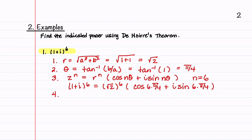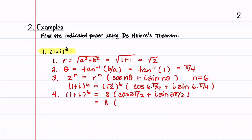Our last step is to simplify. The square root of 2 raised to the 6th is 8. We have cosine of 3 pi over 2 plus i sine of 3 pi over 2. Cosine of 3 pi over 2 is 0, and sine of 3 pi over 2 is negative 1. This gives us a final answer of negative 8i.